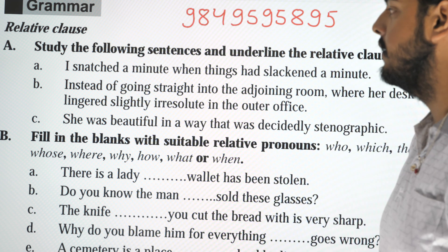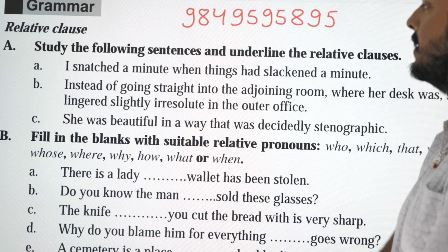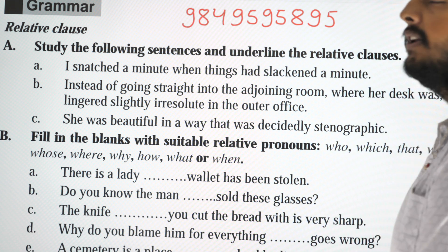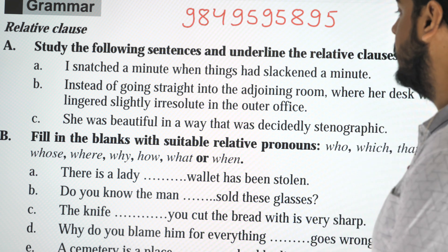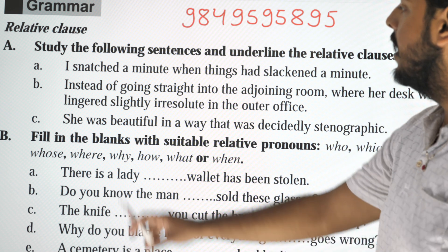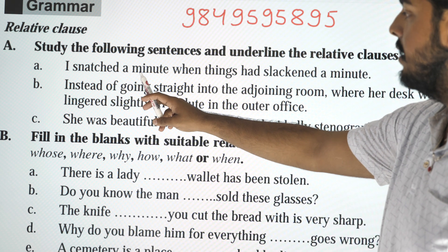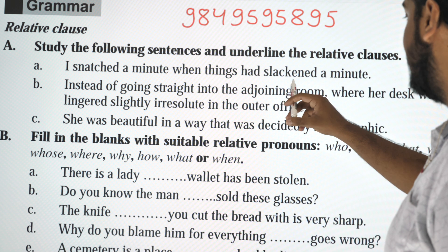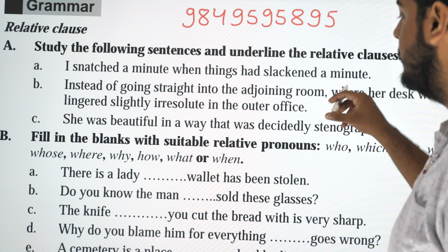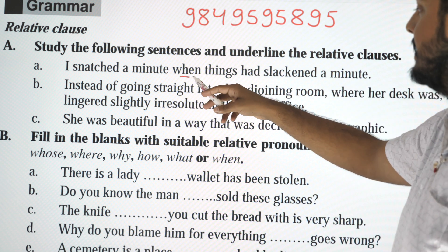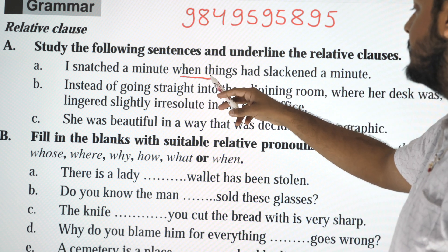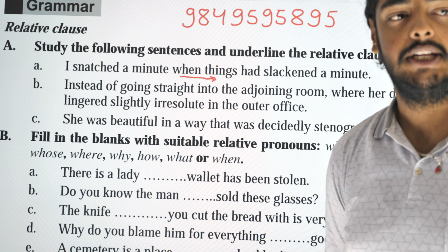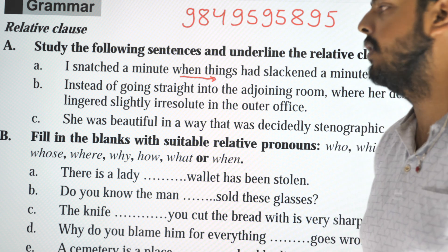First, in our sentences: state the following sentences and underline the relative clause. For example: 'I snatched a minute when things had been slackened.' So 'when things had been slackened' is the relative clause.